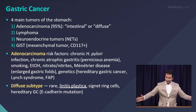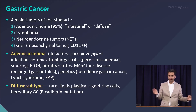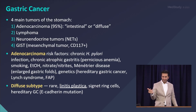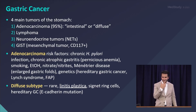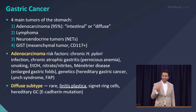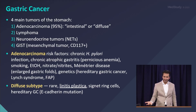Moving further down to gastric cancer — there are four main types, but adenocarcinoma is the overwhelming majority. It can be intestinal or diffuse. The diffuse type is the bad one; this is what can cause linitis plastica, thickening of the stomach, signet ring cells, and high risk for metastases. The main risk factors for gastric adenocarcinoma are chronic irritation of the stomach — H. pylori infection, atrophic gastritis, and pernicious anemia.